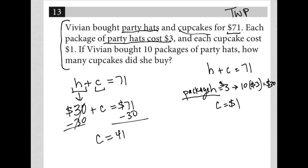And now because each cupcake costs $1, that means there must be 41 cupcakes. That's how we would get $41 to represent the cupcake value or the C value here. So our answer here is 41.